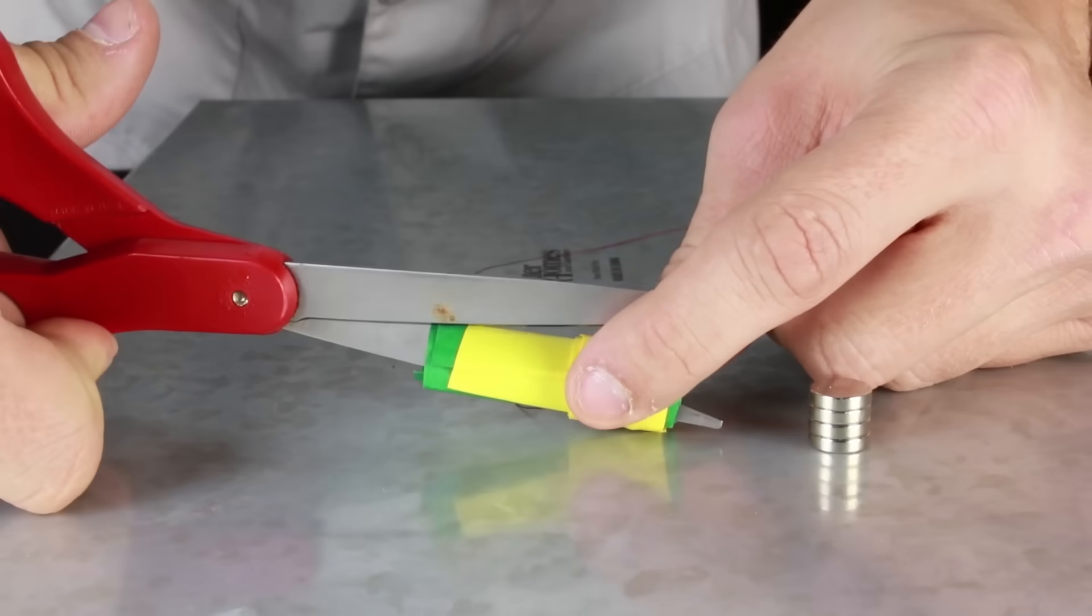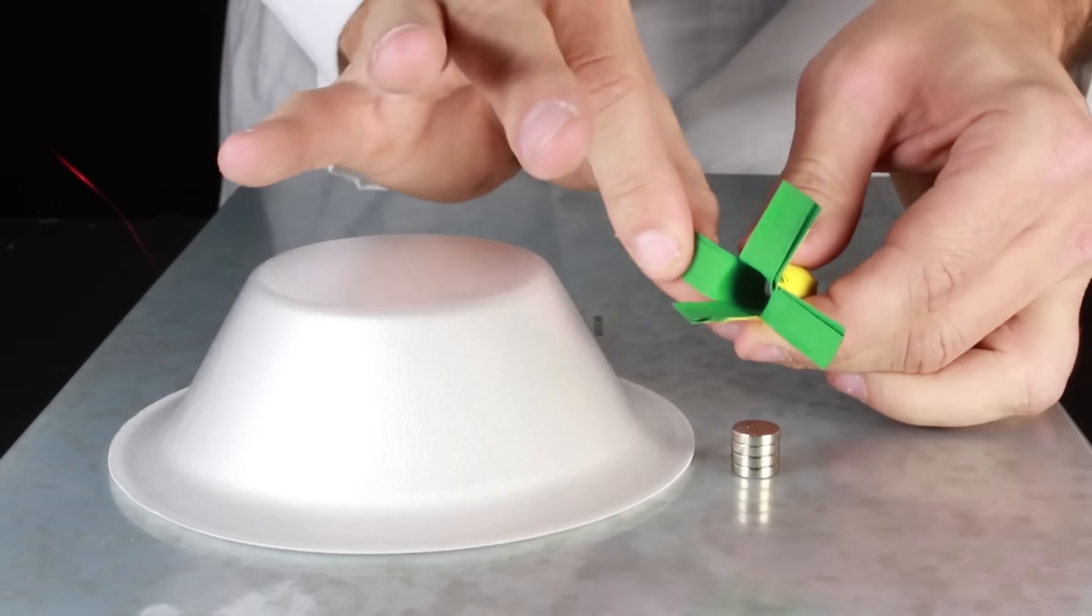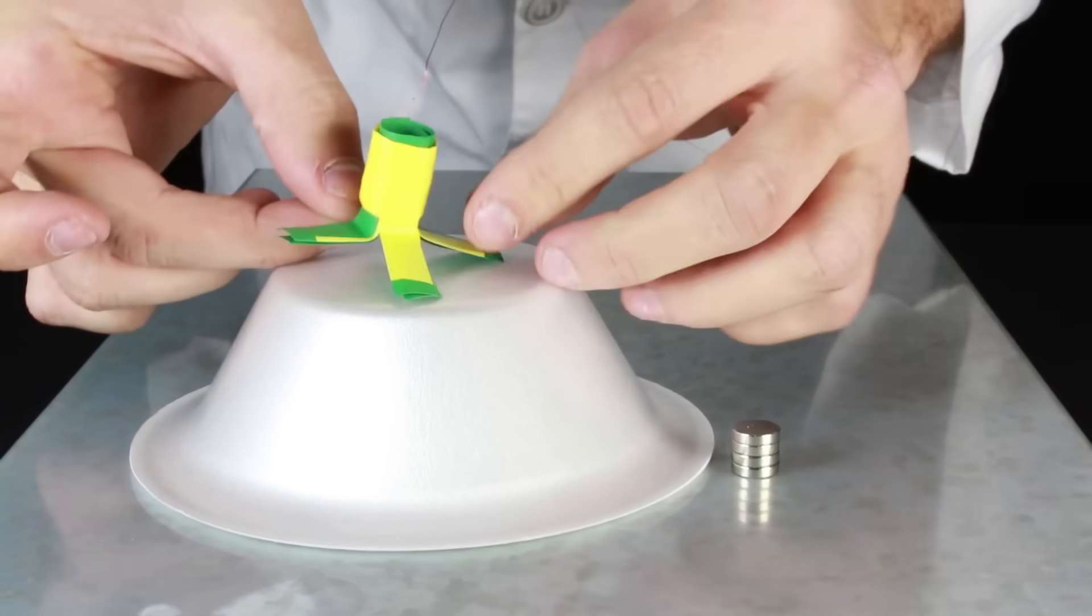Now take the paper end of the tube and cut it into four sections and then tape it to the bottom of a styrofoam bowl.